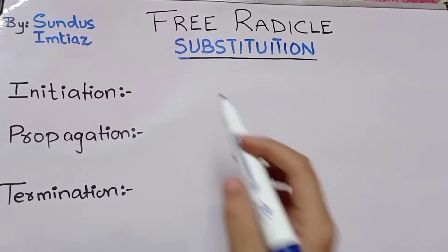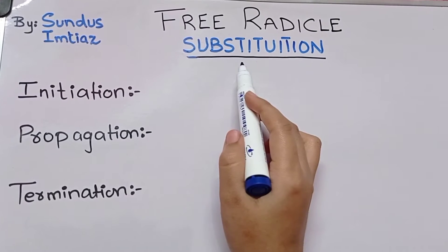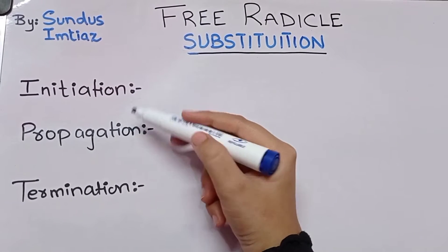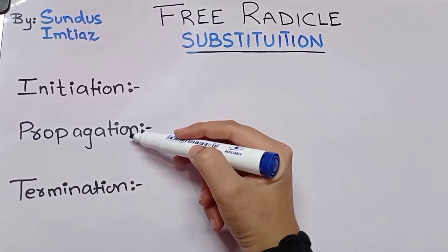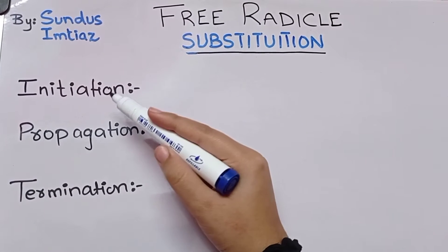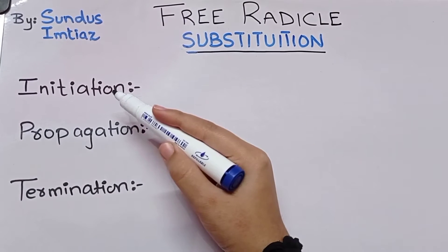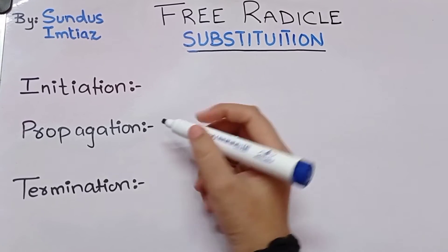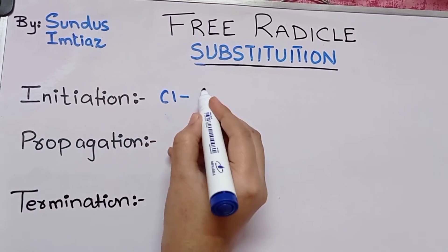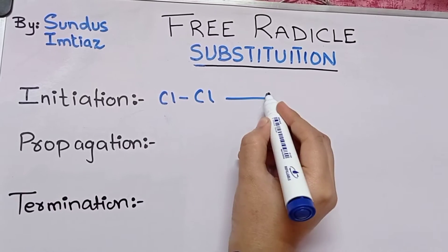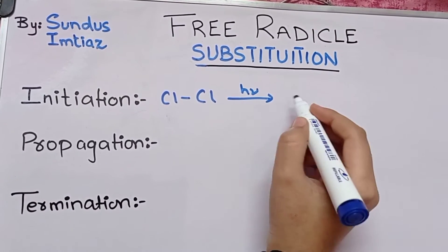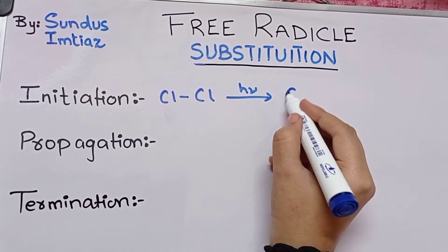Free radical substitution reaction includes three basic steps: initiation, propagation, and termination. The first step is initiation, which means to start or to begin. In this step, the halogen molecule breaks down in the presence of sunlight or UV radiation into free radicals.